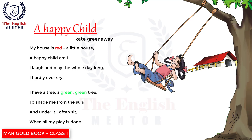Ab hum is poem ko Hindi mein samajhte hain. First paragraph: My house is red, a little house. A happy child am I. I laugh and play the whole day long. I hardly ever cry.